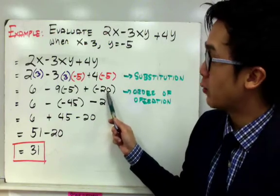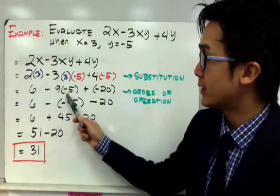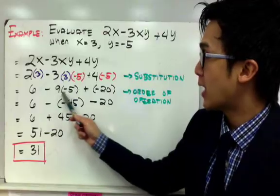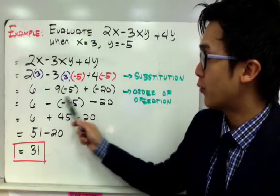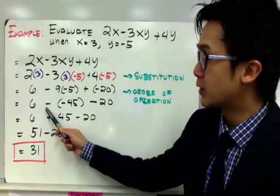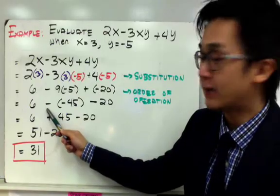Now further simplifying your expression, we can multiply 3 times 3, which is 9, and 9 times negative 5 will give you negative 45. So I haven't changed my sign here yet, and I'm going to do that later on.